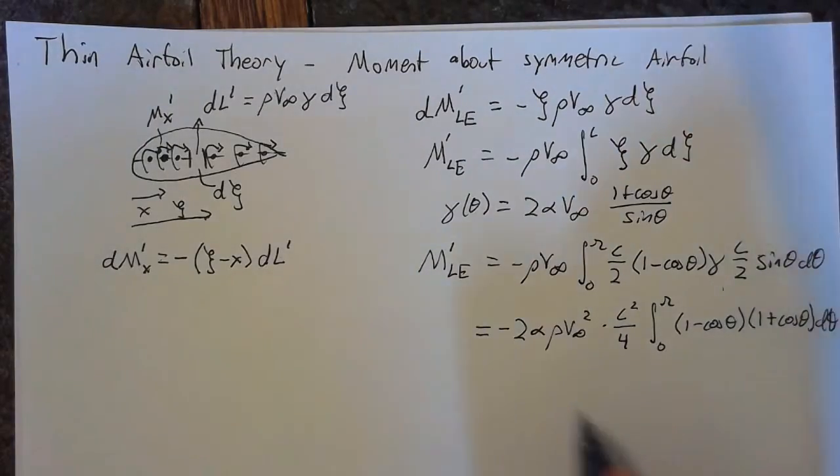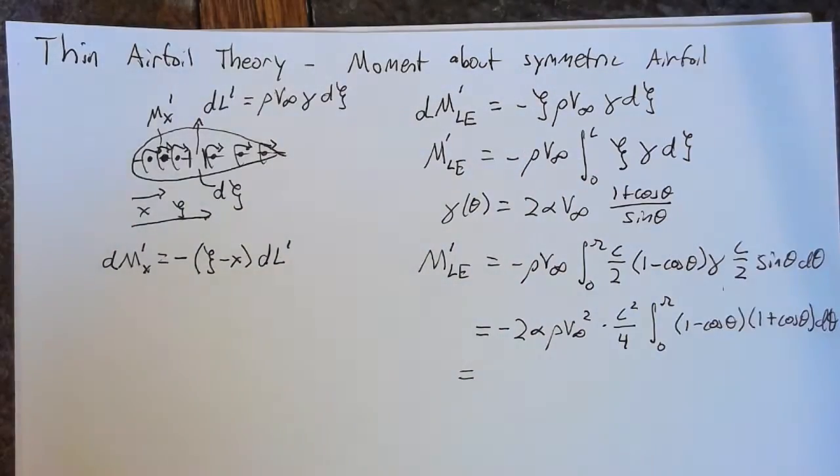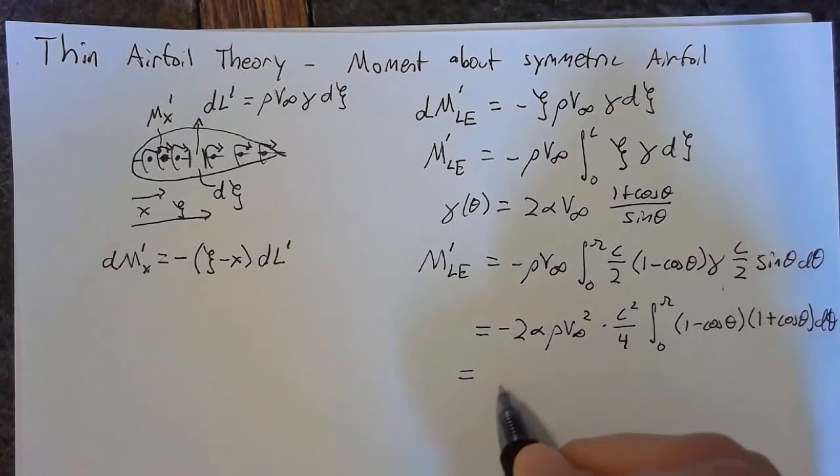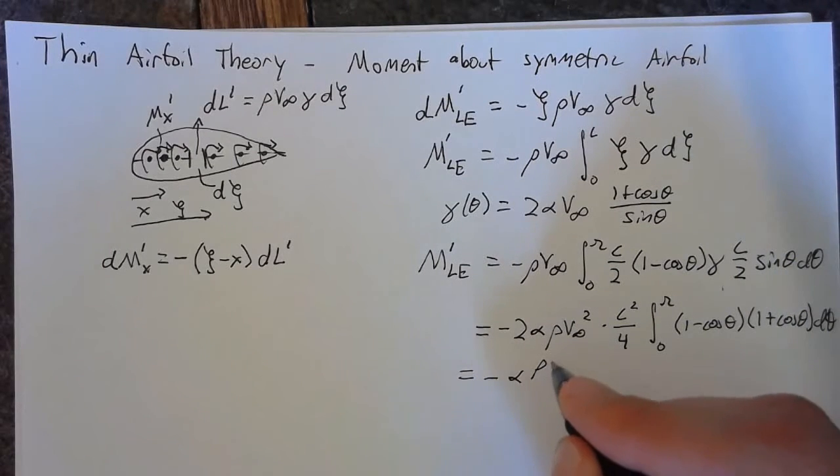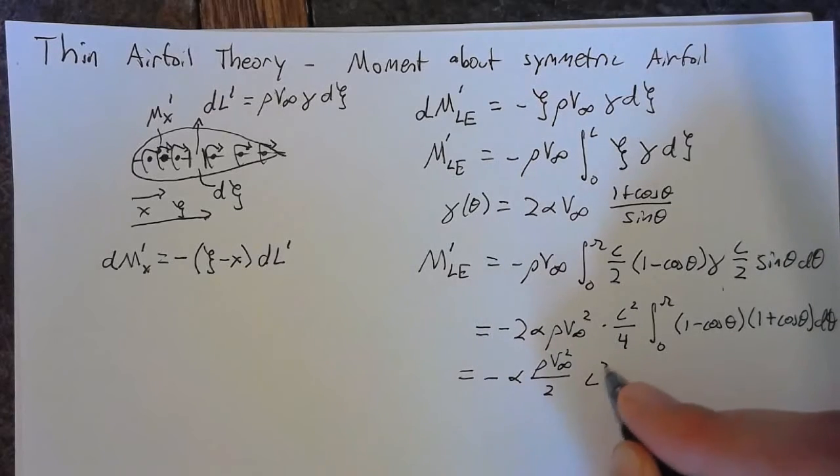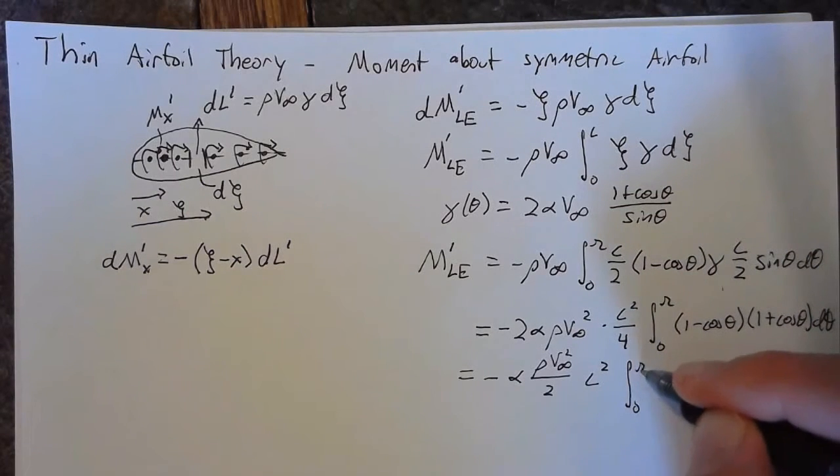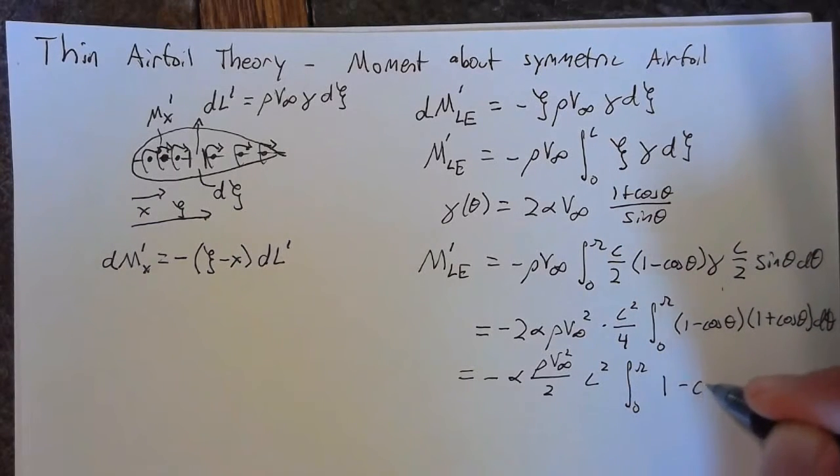Simplifying this further, we can cancel out one of these halves to make this -α ρV∞²/2 times c², and then our integral simplifies to (1 - cos² θ) dθ.